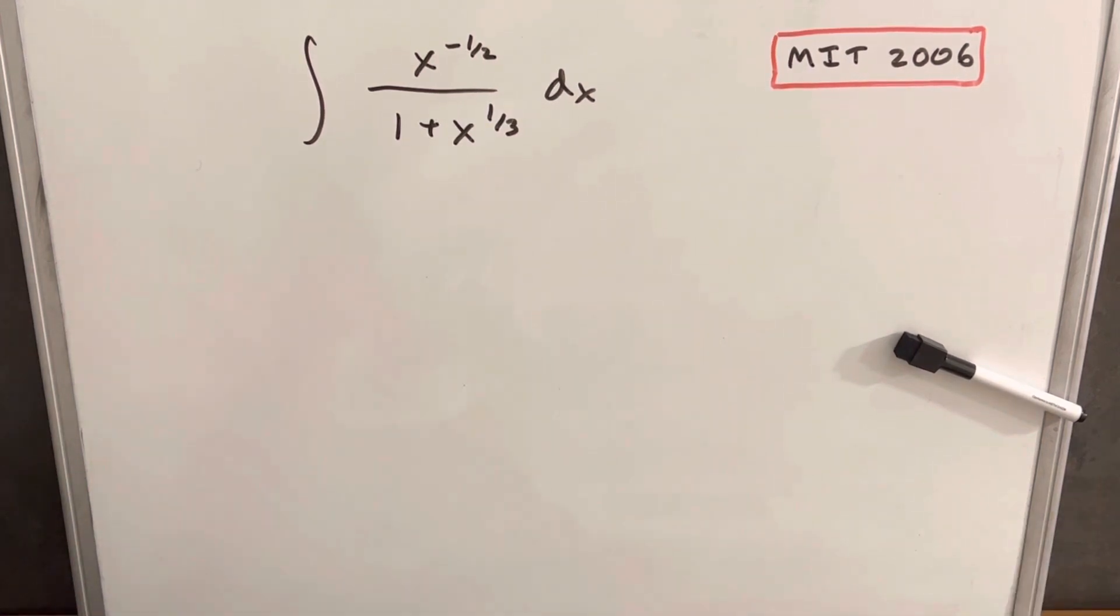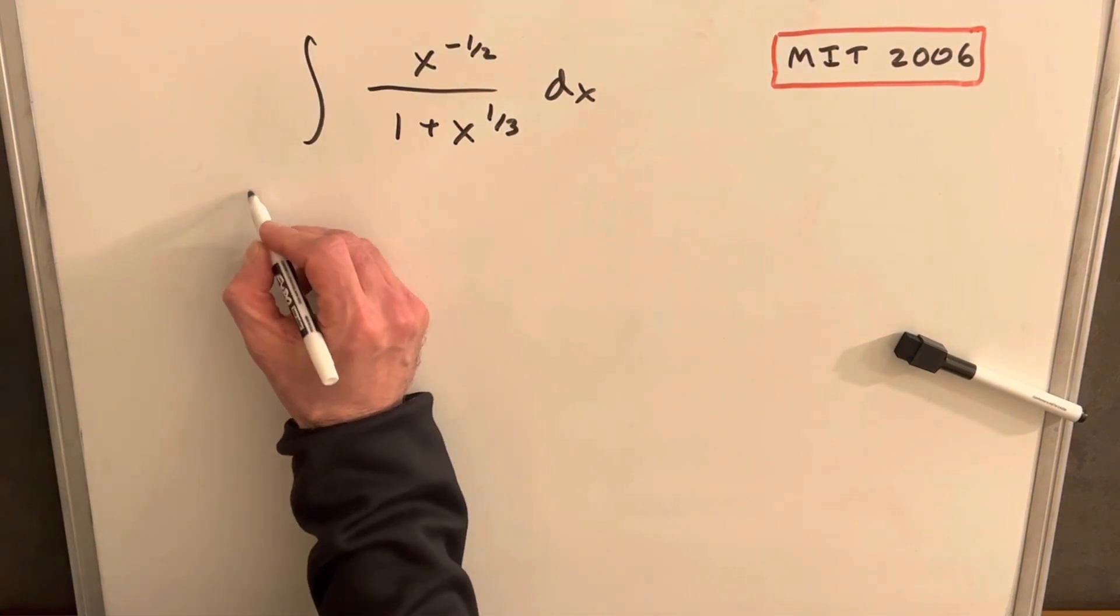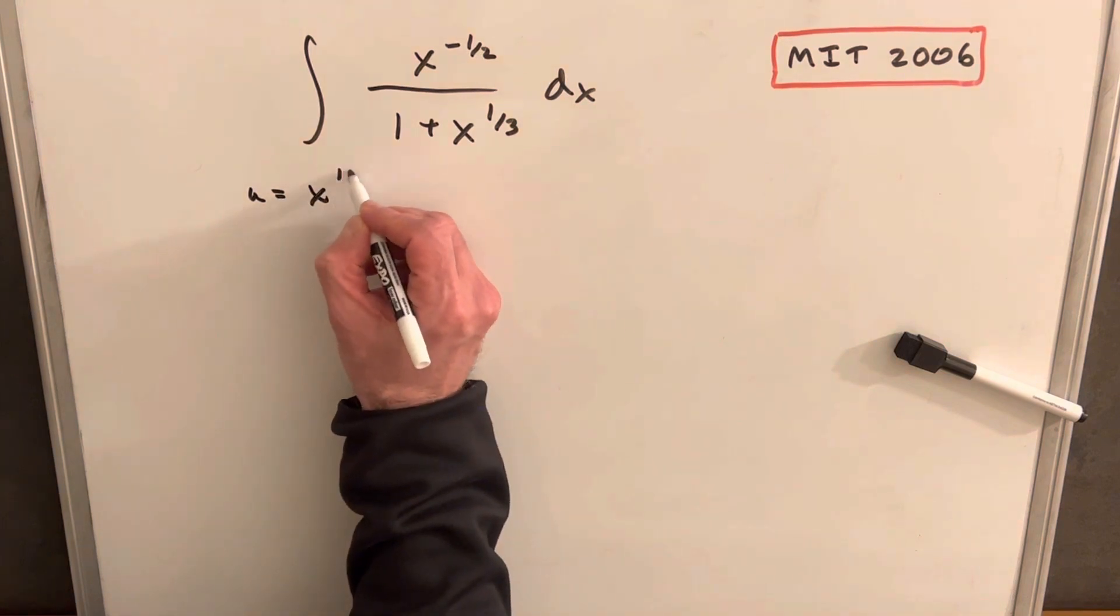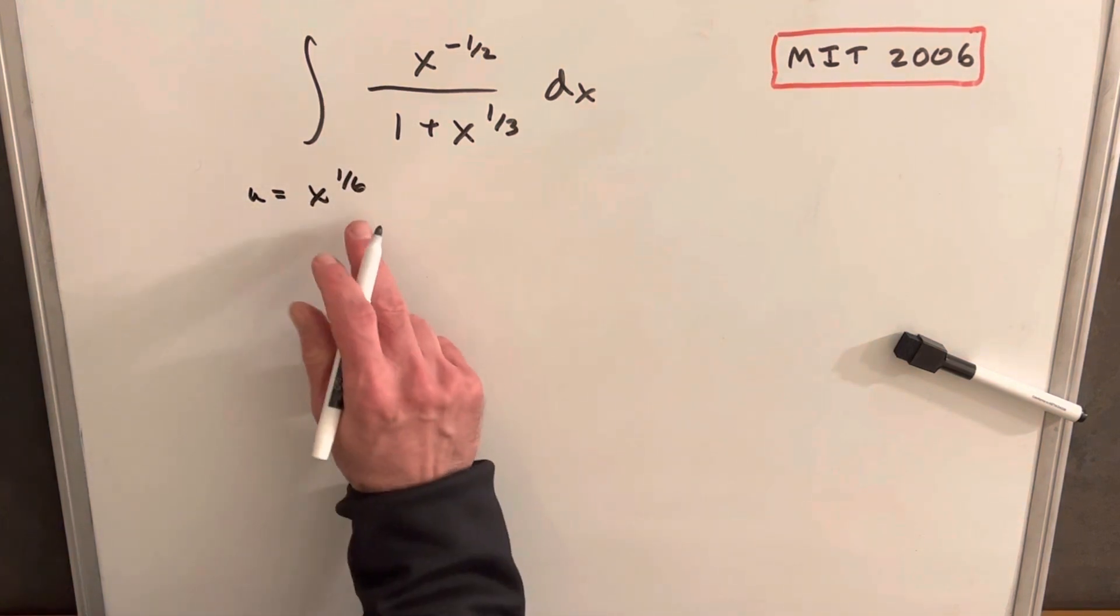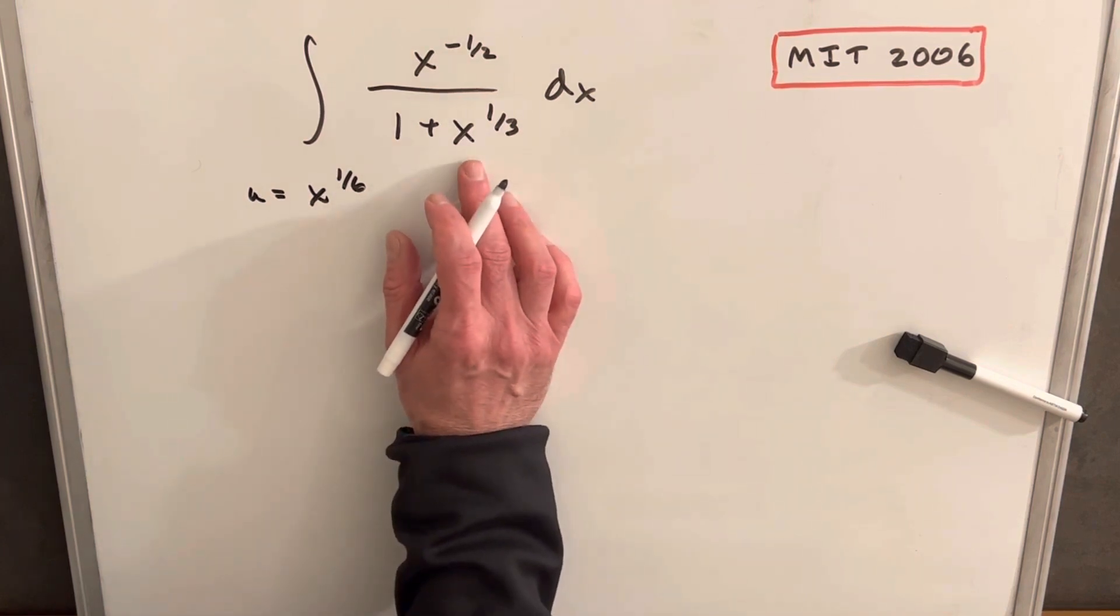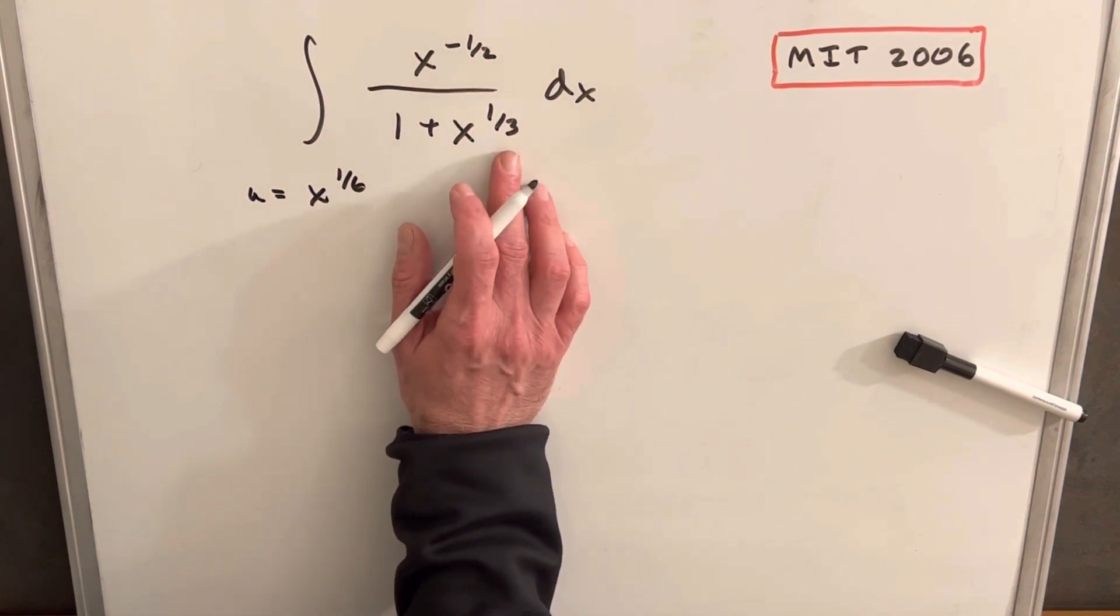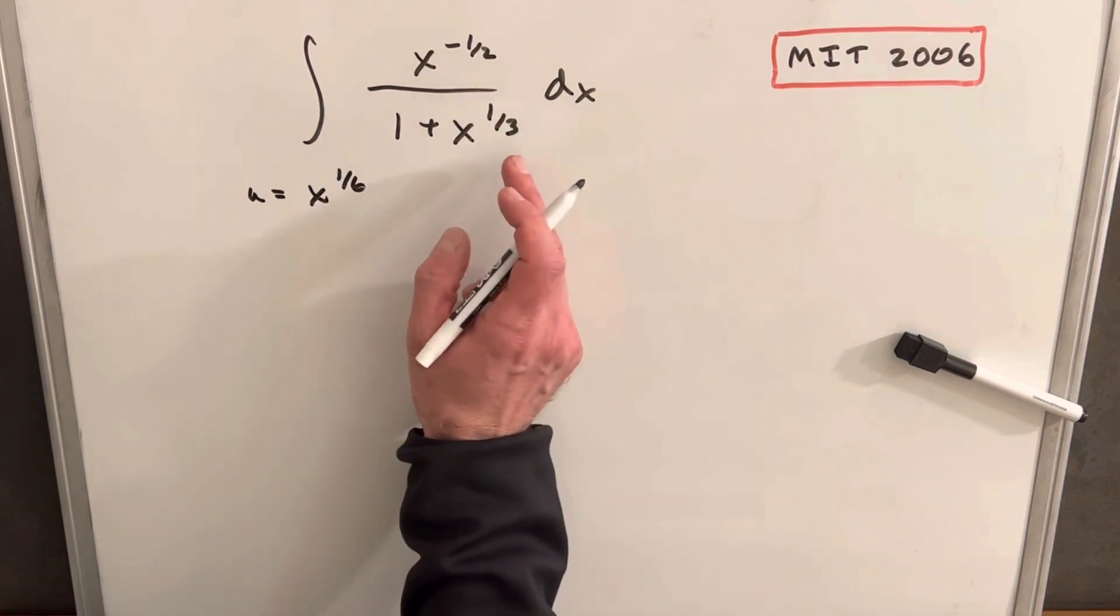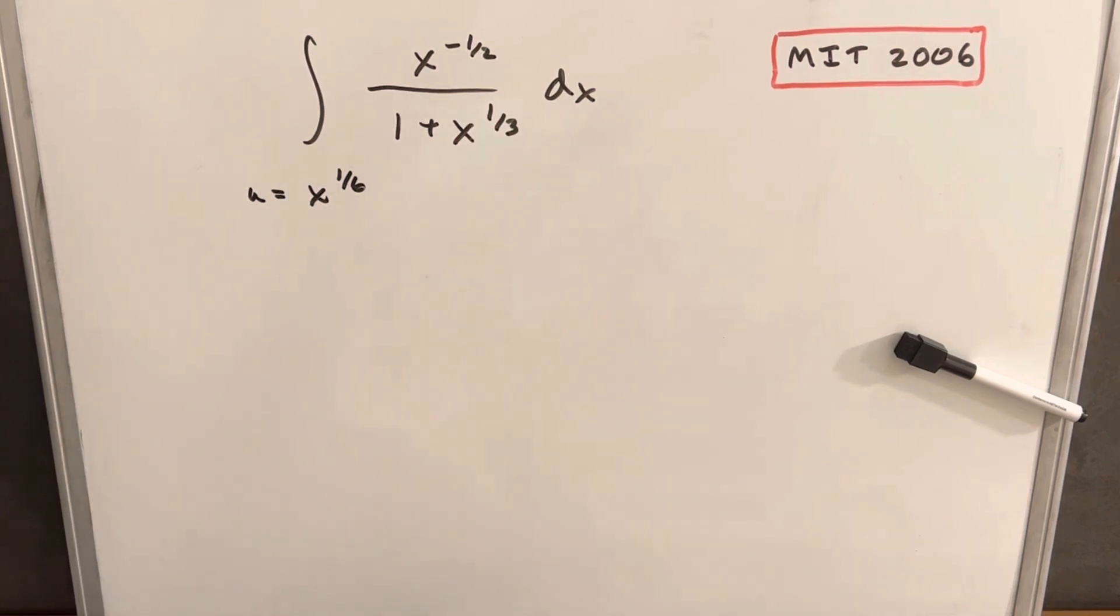There's definitely a bunch of methods that are going to work on this, but what I wanted to try was something like a u-substitution of x to the one-sixth. The reason I chose that is because what I like about this is that it's going to turn x to the one-third into a u-squared, and it's also going to work. Everything's going to have an integer exponent.